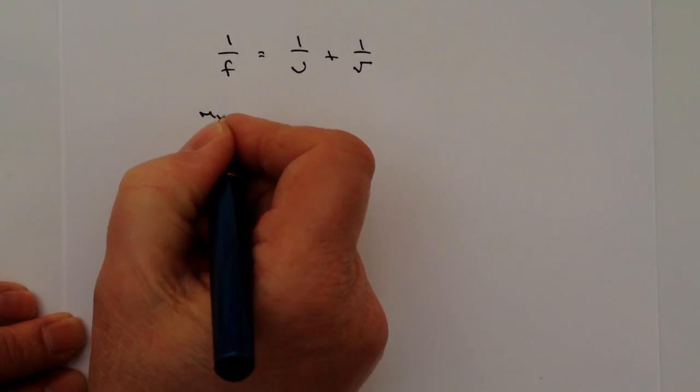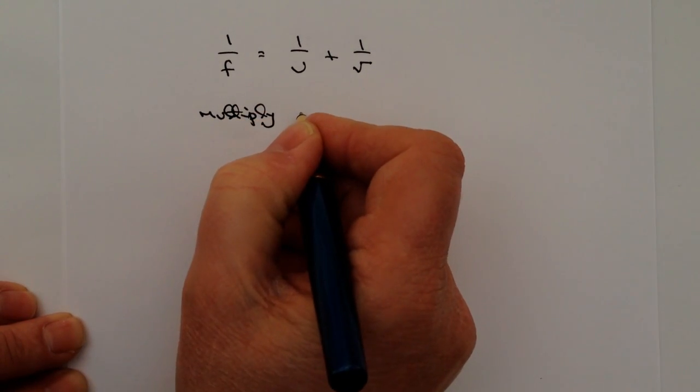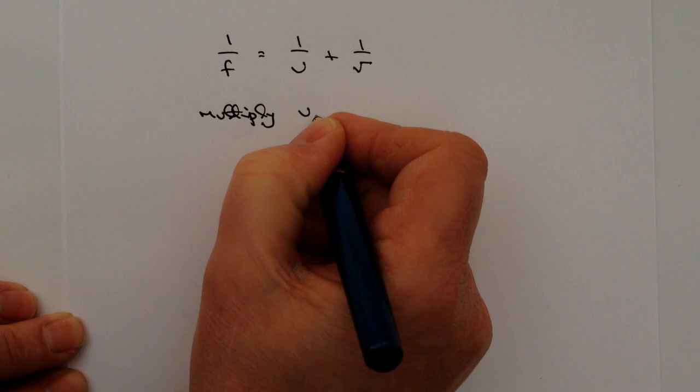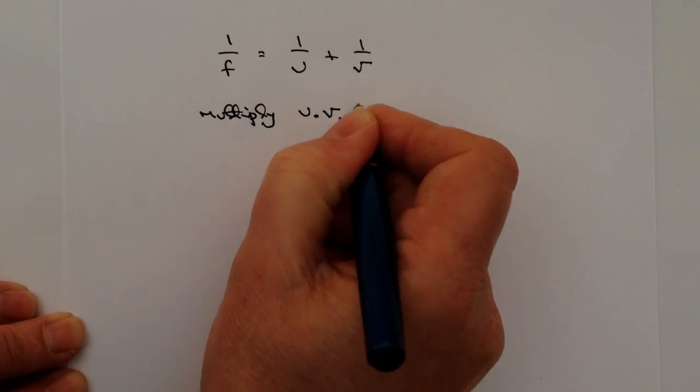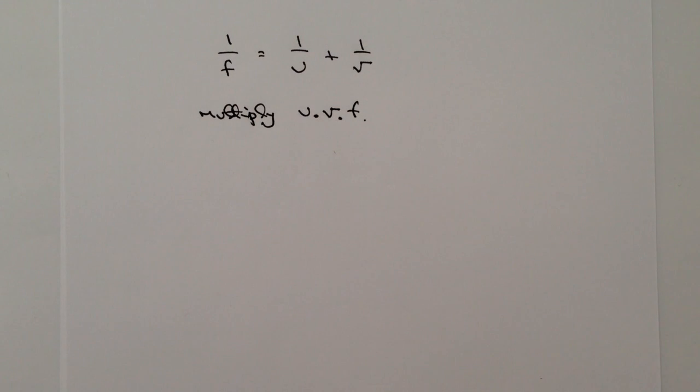I'm going to multiply the whole equation by u times v times f. Now where I put that little dot in there, it's just exactly the same as writing multiply. So let me just write that out again.